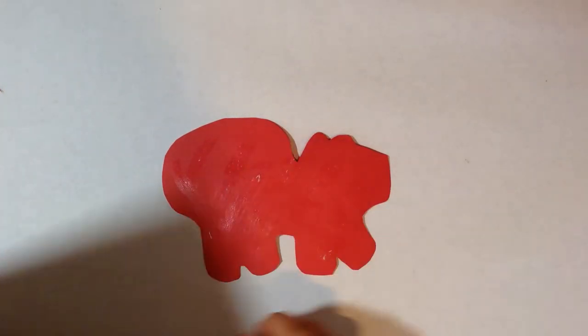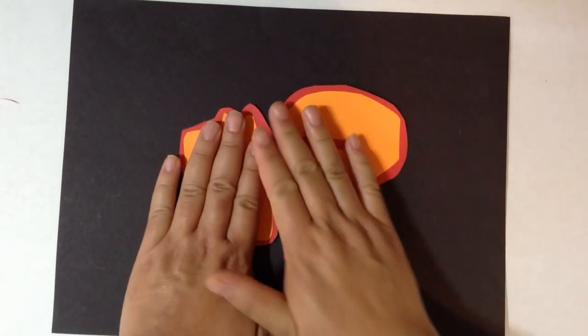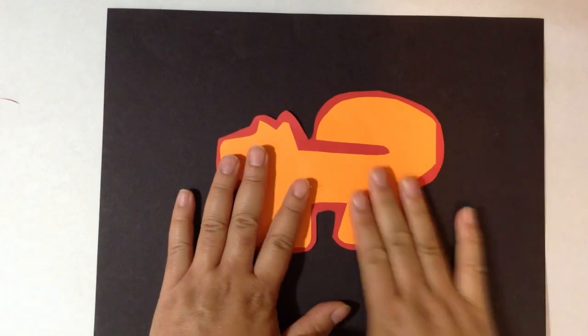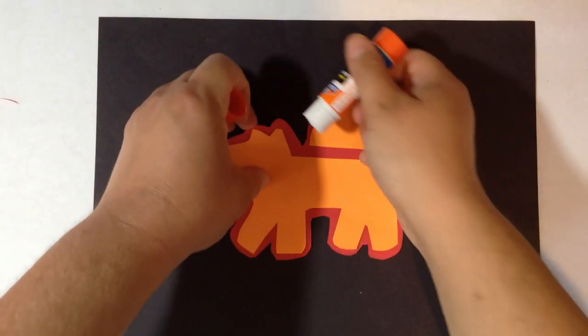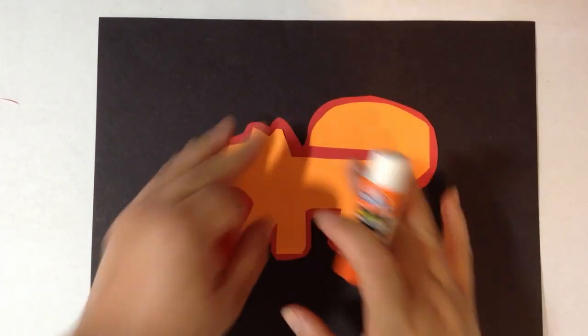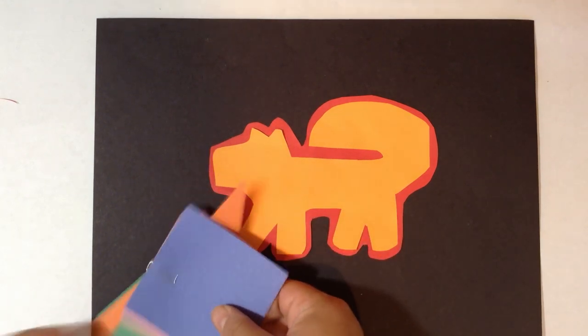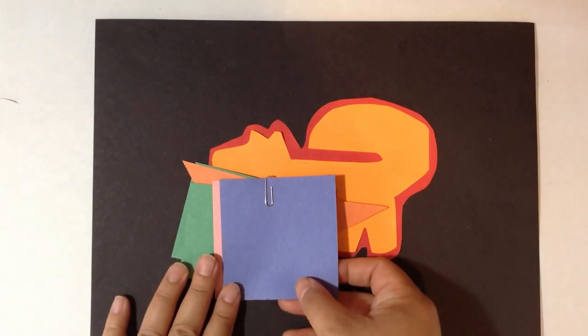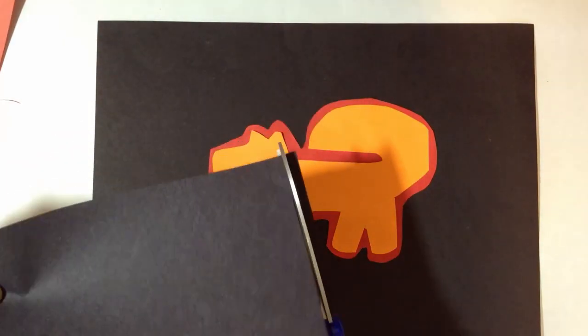Now we are going to glue these 2 pieces together and put it on a black sheet of paper. Each kit includes extra scrap pieces of paper, and the rest of the paper you can use to decorate the black empty space around your animal.